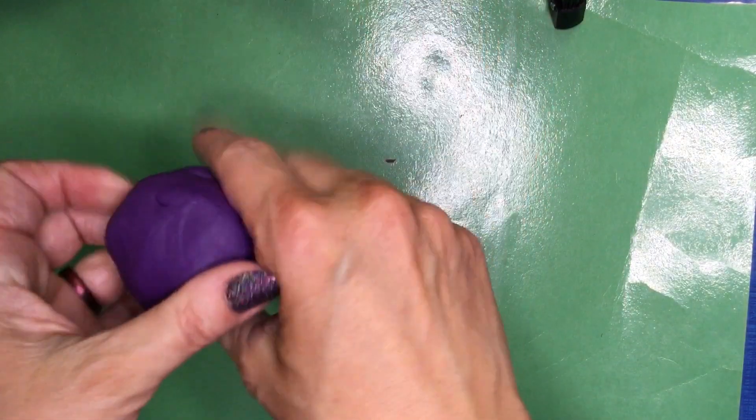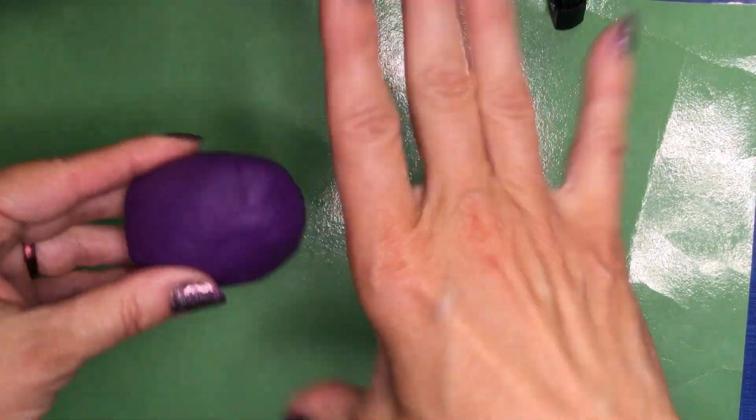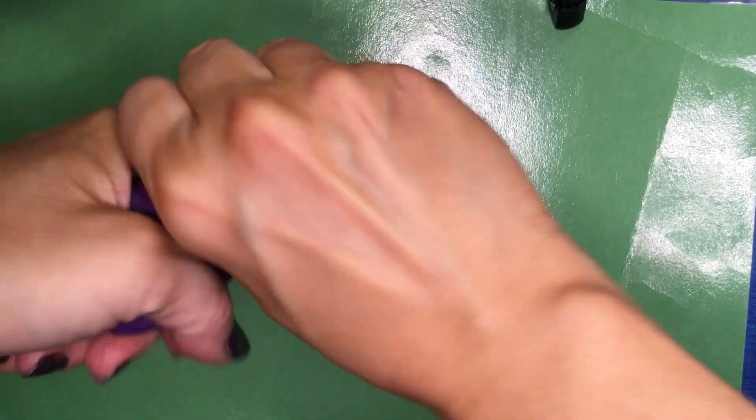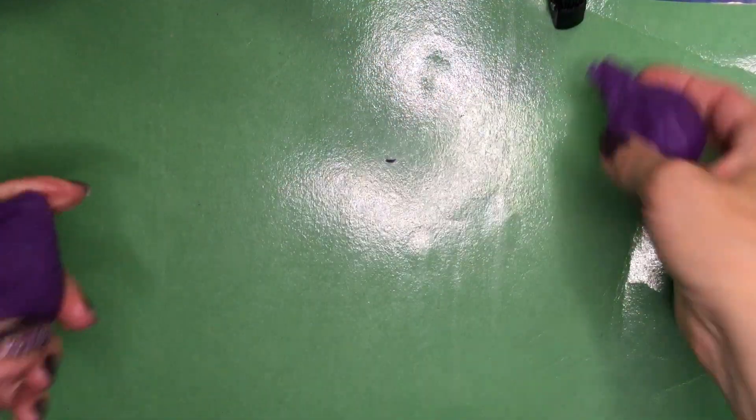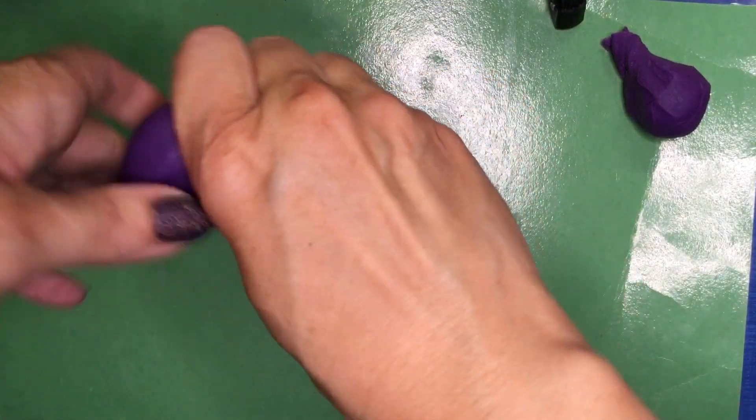Roll it up, split it in two just by twisting in opposite directions just like we did with the pinch pots, then split it again until you have four pieces.